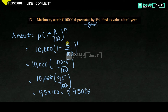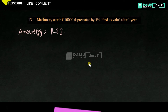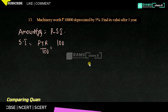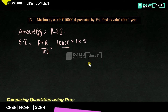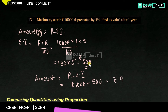Alternatively, using the simple interest method: SI = PTR/100 = (10,000 × 1 × 5)/100. Cancelling two zeros: 100 × 5 = 500 rupees. Since it is depreciation, Amount = P − SI = 10,000 − 500 = 9,500 rupees. Both methods give the same answer.